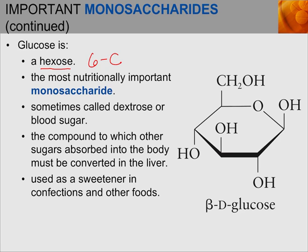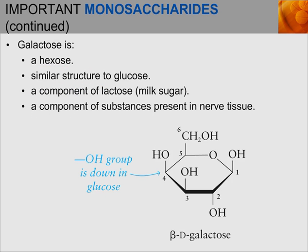Glucose is a hexose with six carbons in its chain, and it's the most nutritionally important monosaccharide — sometimes called dextrose or blood sugar. Glucose is the compound to which other sugars absorbed into the body must be converted in the liver. If you're digesting or metabolizing other sugars, they need to be converted into glucose. Glucose can also be used as a sweetener in desserts or other foods.